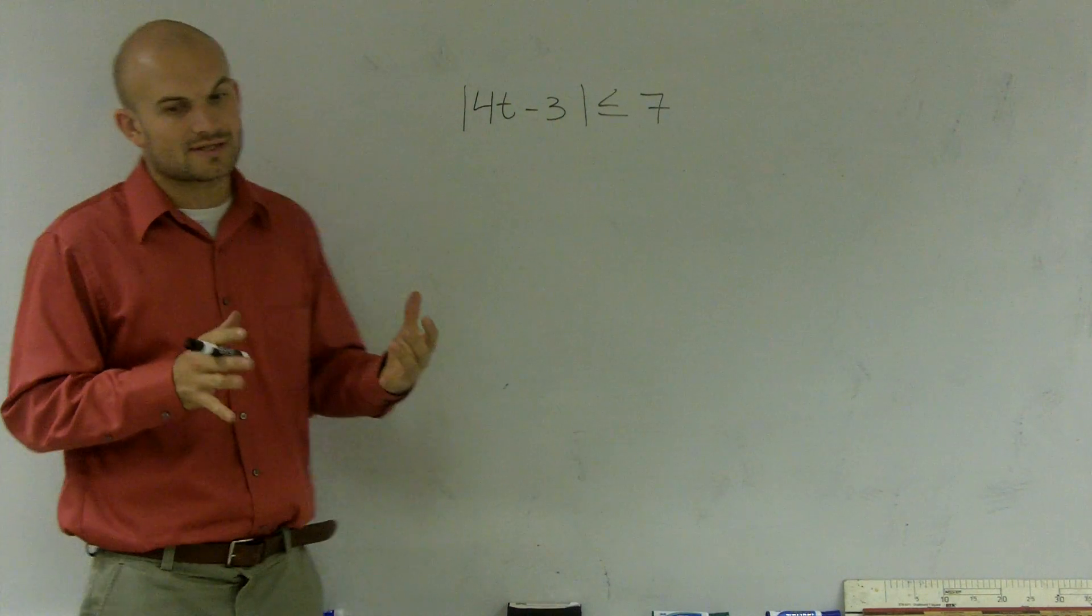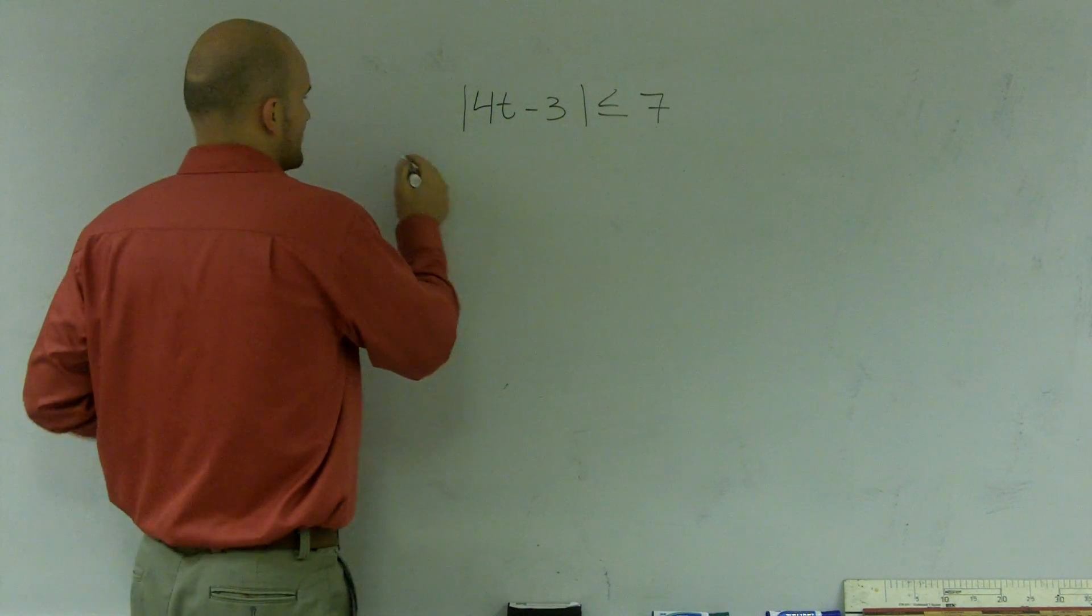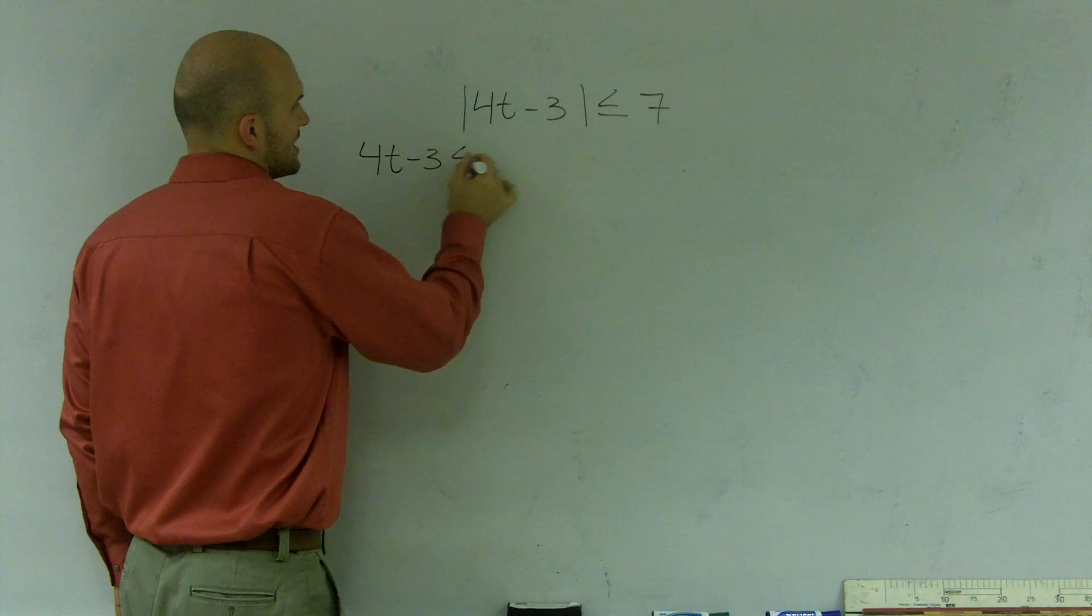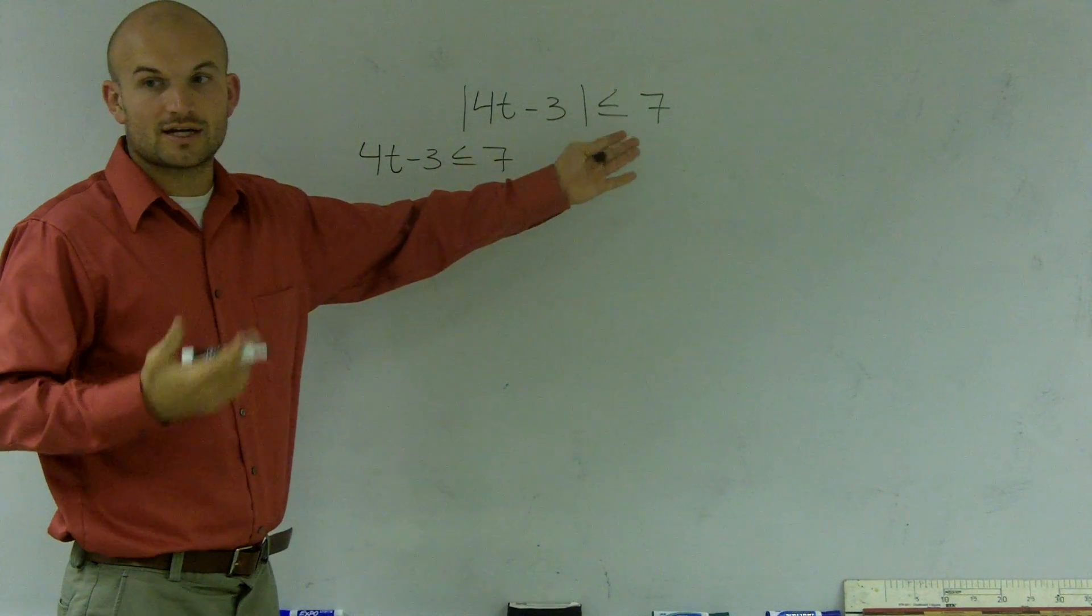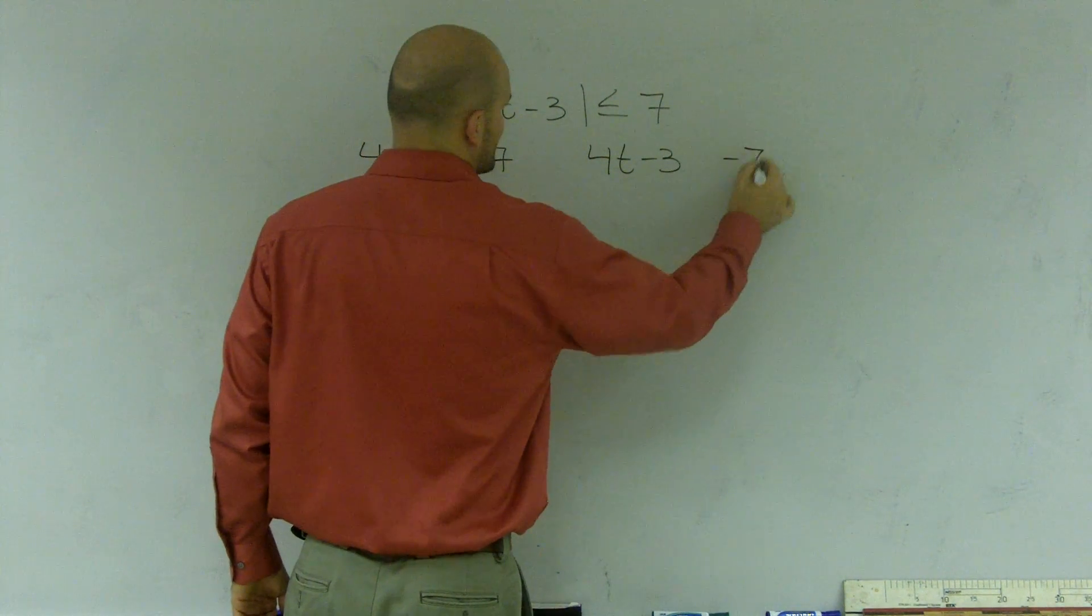Remember, absolute value equations can be represented as two solutions. So I'm going to first write this as 4t minus 3 is less than or equal to 7. And then I also need to check out the negative answer. So I'm going to do 4t minus 3 and negative 7.